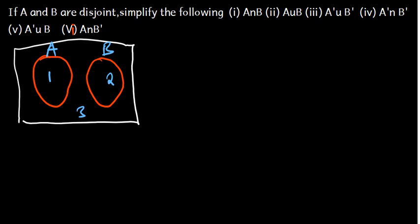Part 1 is A intersection B. What is A intersection B? In this case, we don't have any intersection, so A intersection B is going to be the empty set.